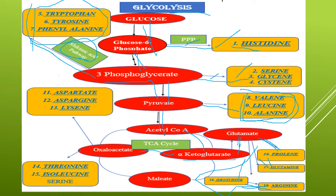After a few steps, alpha-ketoglutarate is converted to malate, and from malate it is converted to oxaloacetate. From oxaloacetate, several amino acids are biosynthesized: threonine, isoleucine, and serine. Apart from that, another three amino acids — aspartate, asparagine, and lysine — are also there. That is about the amino acid pathway.